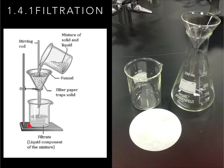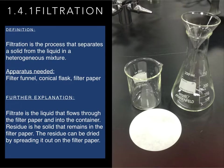What you get in the second beaker is called the filtrate. We also need a stirring rod to help remove solid particles that are blocking the way and not allowing the liquid to flow down. Filtration is the process that separates solid from liquid in a heterogeneous mixture.